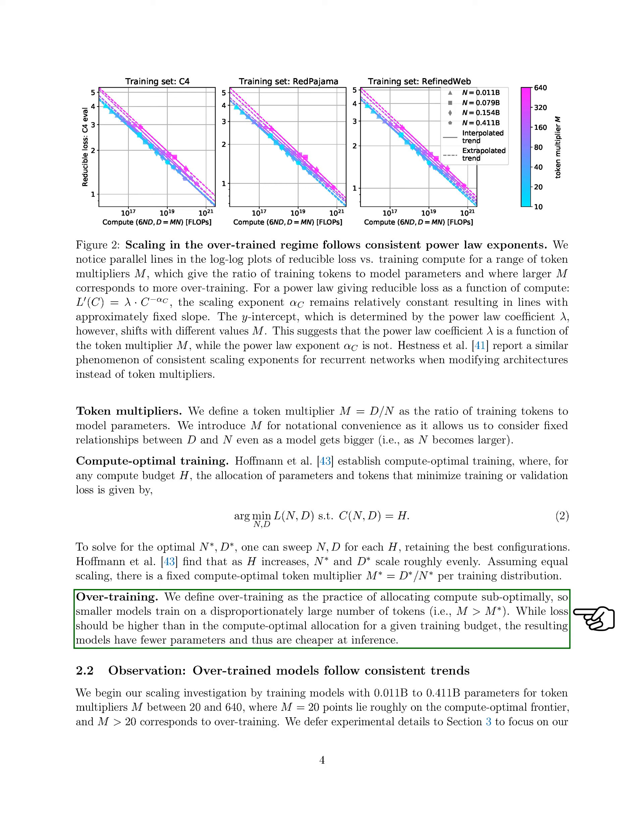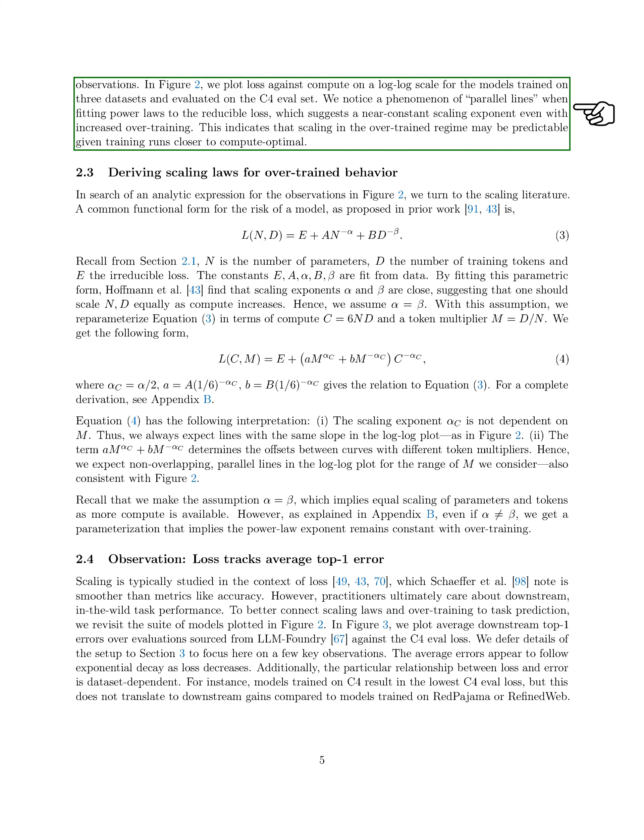Our investigation into scaling begins by training models with varying parameters and token ratios. We observe that even with increased overtraining, there is a consistent trend in the reducible loss when plotted against compute on a logarithmic scale. This suggests that scaling in the over-trained scenario may be predictable based on training runs closer to the compute optimal point.